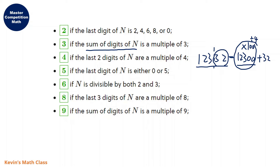The divisibility rule of five is easy — the last digit is zero or five. For the divisibility rule of six, we can use the divisibility rules of two and three for both.